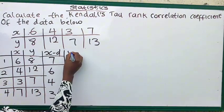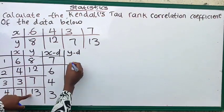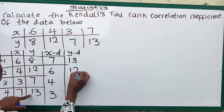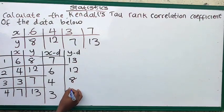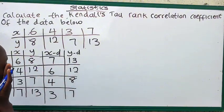Let's arrange y in a descending order. Y in descending order we give 13, 12, 8, and 7. That's y in a descending order.